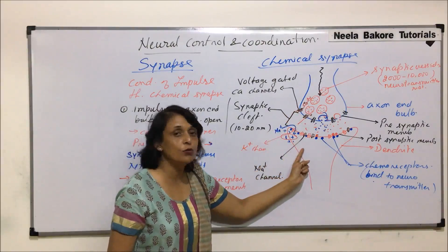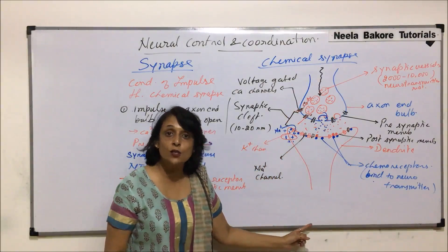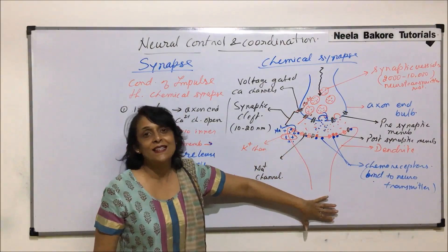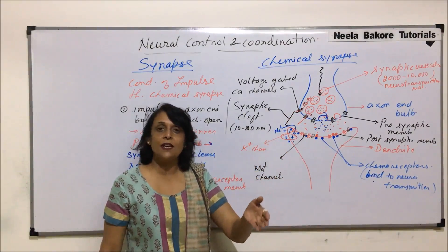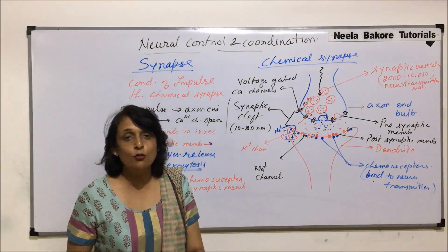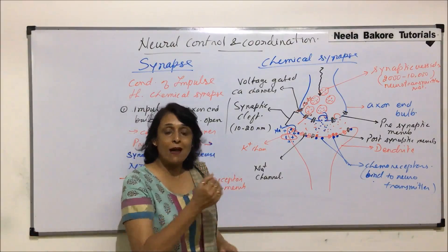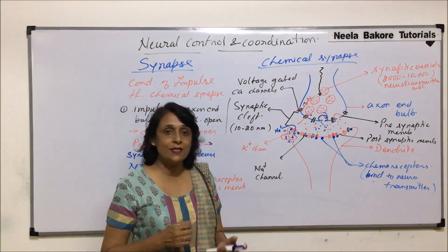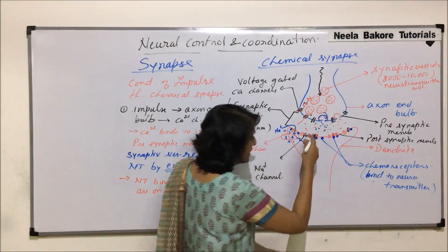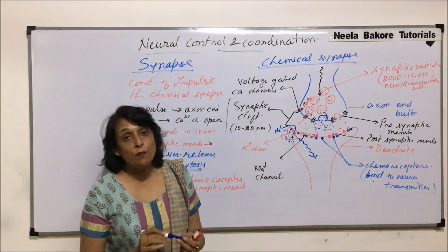Sodium ions move in, the inner side of the membrane becomes electropositive and the outer becomes electronegative — this is depolarization. The impulse has reached from one neuron to the other. It will now be conducted from the dendrite to the cytone and then by another axon to another neuron through a synapse.